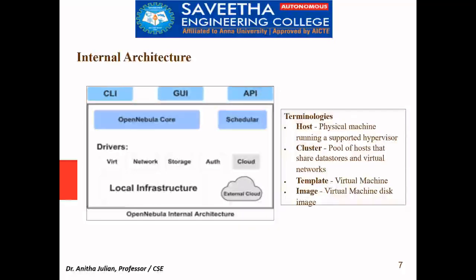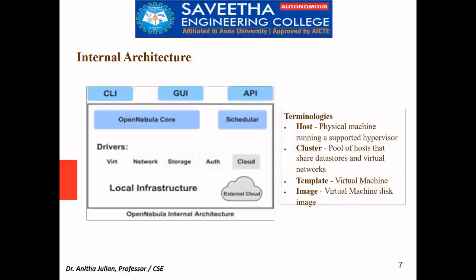Looking at the internal architecture in more detail: there is the core, a scheduler, and drivers that provide the features. There is local infrastructure and external cloud access. CLI (Command Line Interface), GUI (Graphical User Interface), and API (Application Program Interface) are all available for the user to interact with OpenNebula. Common terminologies used across all software environments: host is the physical machine running under a hypervisor; cluster is a pool of hosts; template is the virtual machine definition; and image is the virtual machine's disk image, i.e., storage.